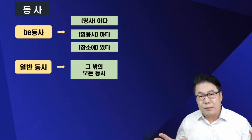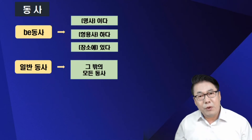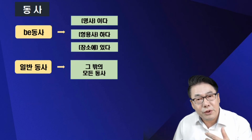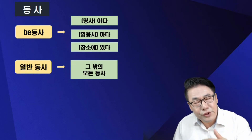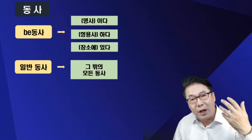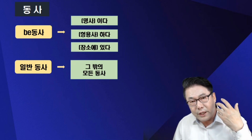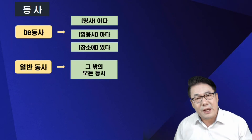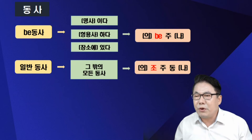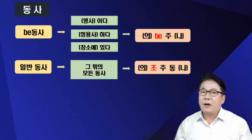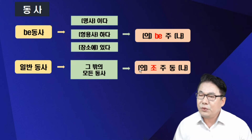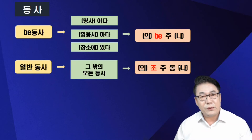의문문을 우선 다루기로 했는데, 모든 대화는 질문과 대답으로 나누어졌는데 대답은 공부할 필요가 없다고 앞에서 말씀드렸죠. 질문만 우선 하자는 얘기죠. 비동사로 물어보는 의문문, 즉 명사이다·형용사다·장소에 있다 뉘앙스의 25%는 무조건 '의비주나'로 물어보면 됩니다. 그렇지 않은 건 '의조주동나'로 물어보면 됩니다. 의비주나는 의문사·비동사·주어·나머지의 약자이고, 의조주동나는 의문사·조동사·주어·일반동사·나머지의 약자입니다.